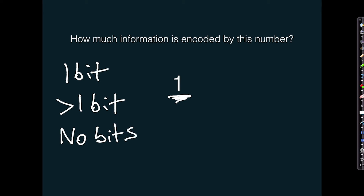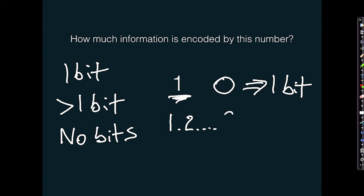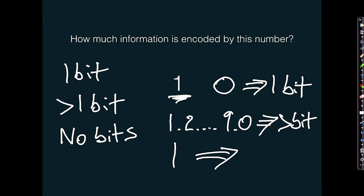If your answer is no information, you also might be right. How much information is encoded by this one depends upon how many states are ruled out. If it's a choice between one or zero, it encodes one bit of information. If it's a choice between one and two through nine or zero, it's more than one bit. If it's simply a choice between one and one — i.e., there is no choice — then there's no information. You don't gain any information by learning the system is in state one because it's the only possible state.